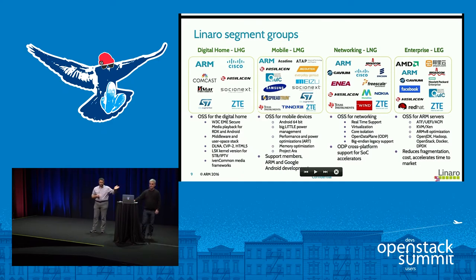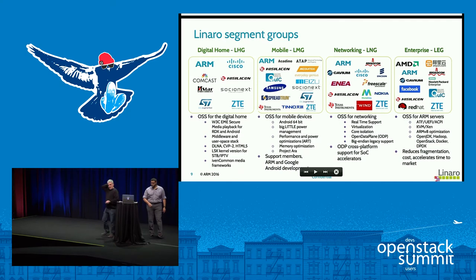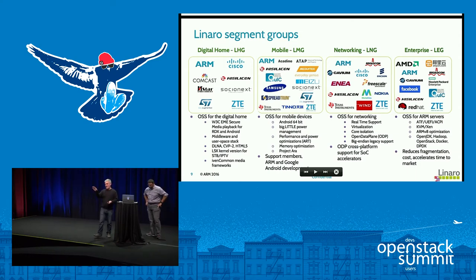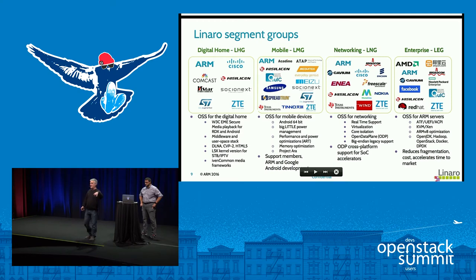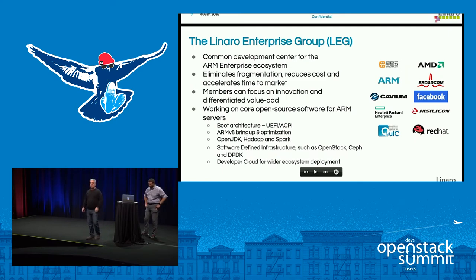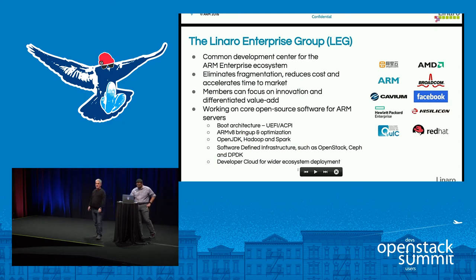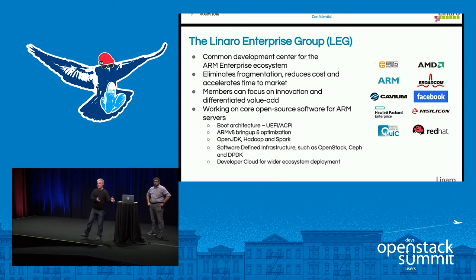A lot of how we operate and enable open source is through an organization called Linaro — a not-for-profit engineering company that ARM and several partners established five years ago. This is where we combine resources to work on common engineering. Their whole goal is to contribute open source software upstream on behalf of ARM and its partners. I'm going to hand over to Martin from Linaro. The enterprise group members include ARM, Alibaba, Facebook, Cavium, Red Hat, Qualcomm, and HPE — a good mix of consumers, SOC builders, and server builders.